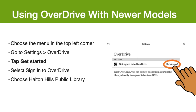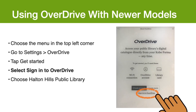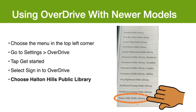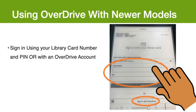Tap Get Started and click Sign In to Overdrive. Under Find a Public Library, you have to enter Halton Hills Public Library. You will then be asked to choose your library from all of the public libraries in the Ontario Library Service Consortium. Scroll through all the libraries until you find Halton Hills Public Library. You can sign in using your library card number and PIN, usually the last four digits of your phone number.